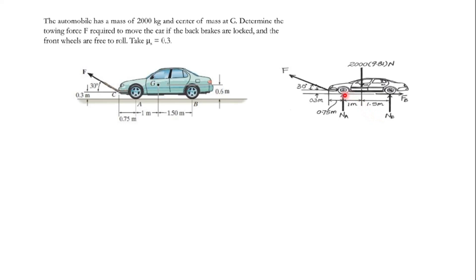Looking at the conditions given: the back brakes are locked and the front wheels are free to roll. The coefficient of static friction is 0.3, so the back tire is going to experience static friction and the front tire is going to experience kinetic friction. Therefore, FB is going to take part in our solution and not FA.